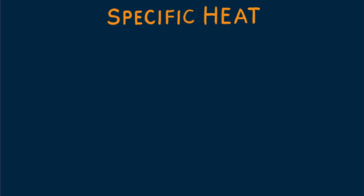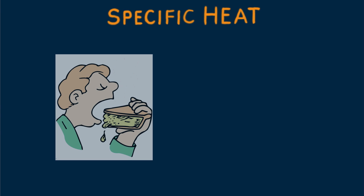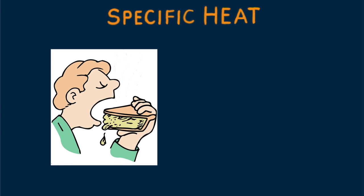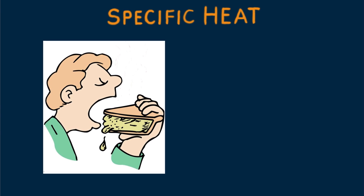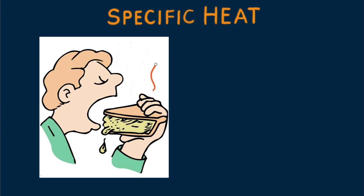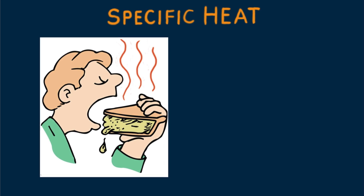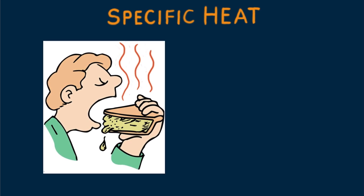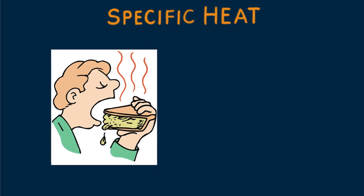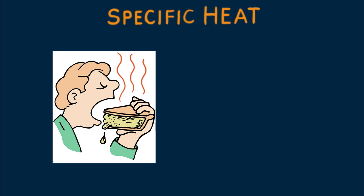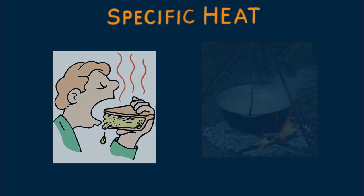Some foods remain hotter much longer than others do. The filling of hot apple pie may be too hot to eat even though the crust is not — the pie filling takes longer to cool than the crust. Different substances have different capacities for storing internal energy.